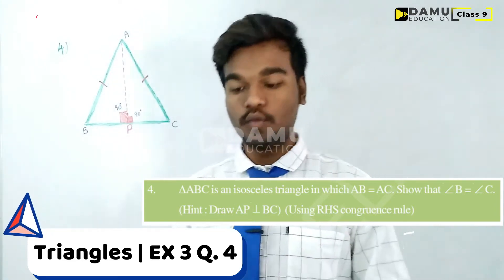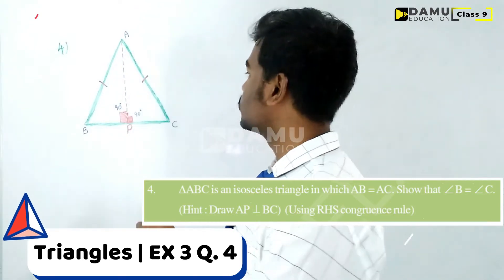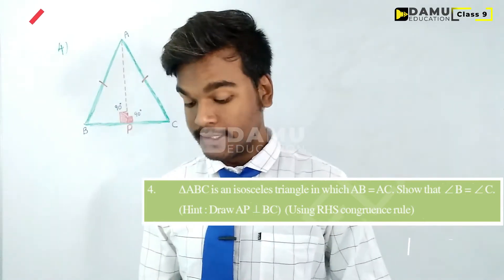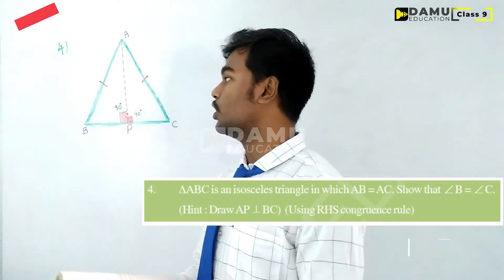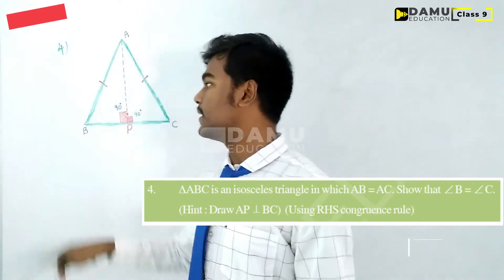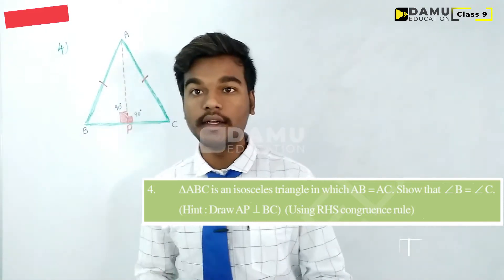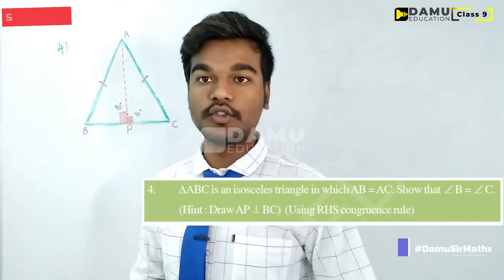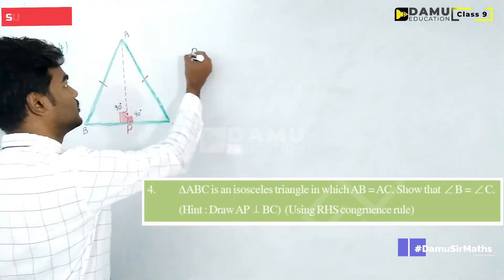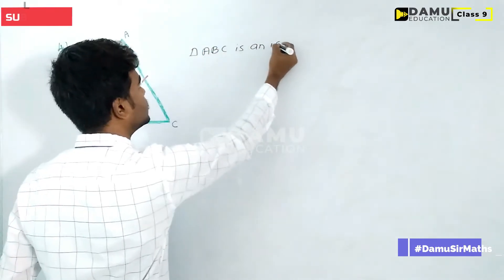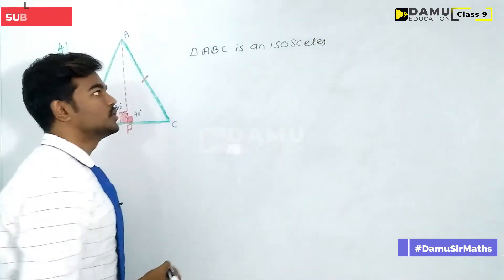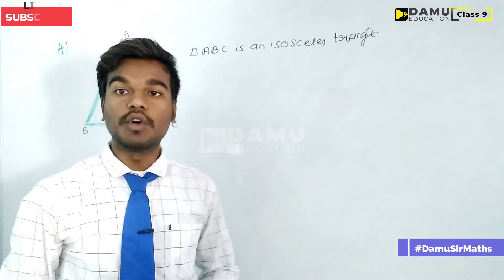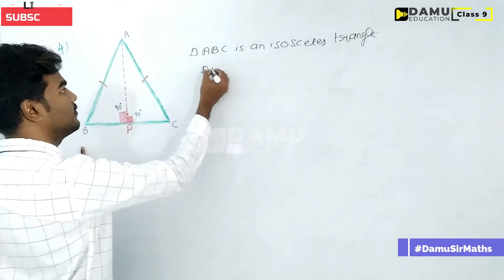Our next question, the fourth one: triangle ABC is an isosceles triangle. An isosceles triangle is one in which any two sides are equal. The given condition here is AB equal to AC. We need to show that angle B will be equal to angle C.